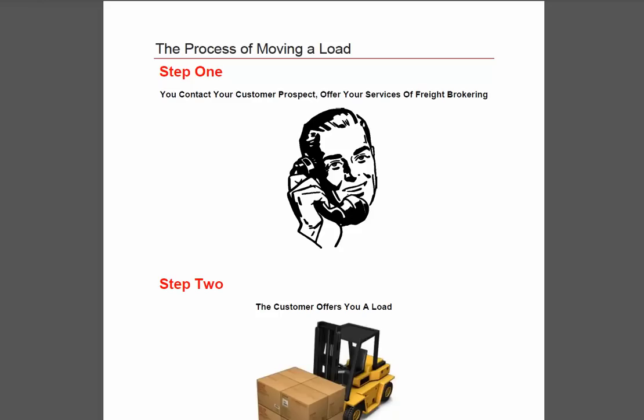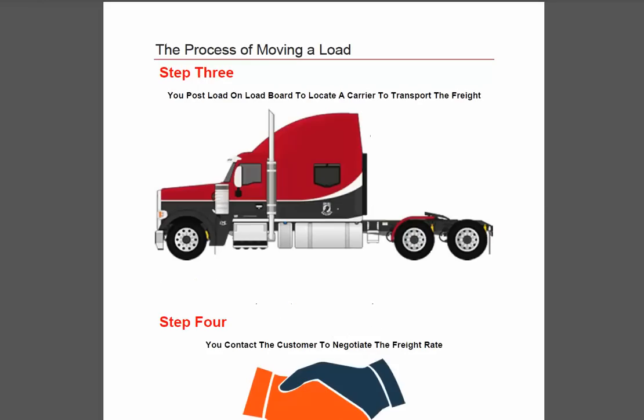Once you've gathered all of the information, you're going to basically confirm that you'll send him your information so he can keep it on file, because what you're doing, in essence, is building a customer database. Step two: he's offered you the load. Now what do you do? You've got all the required information, so now you have to go find a carrier for it.